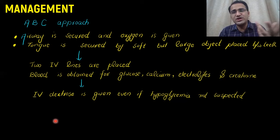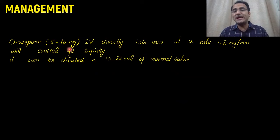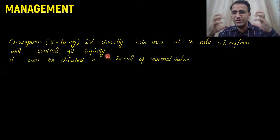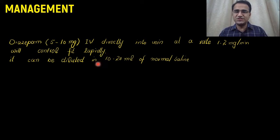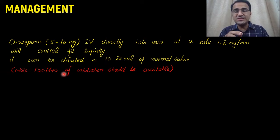Diazepam 5 to 10 mg IV is given directly into the vein at a rate of 1 to 2 mg per minute. It will control the seizure rapidly most of the time. The benzodiazepine will suppress the abnormal brain activity and result in cessation of the seizure. It can be diluted in 10 to 20 ml of normal saline or given directly into the vein. Remember, benzodiazepines can cause respiratory depression, so intubation facilities must be available when giving any benzodiazepine IV.